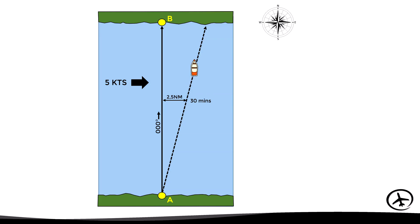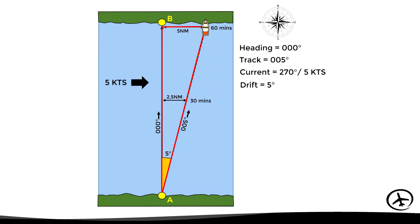After 60 minutes it will be 5 miles off course. If we analyze this situation, we can see that there is a triangle which can be used to determine the drift angle, which in this case is 5 degrees. Therefore, under these conditions with a north heading, the actual track will be 005.